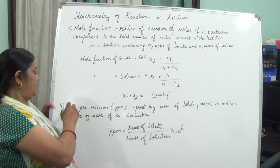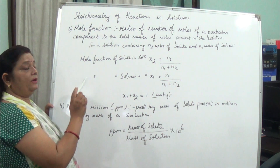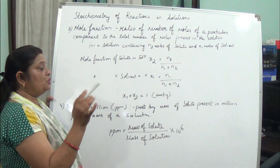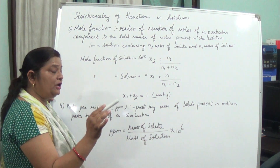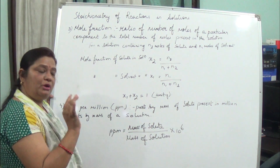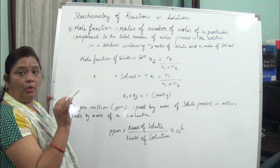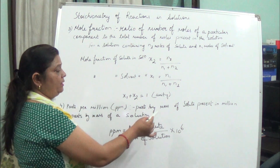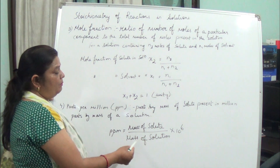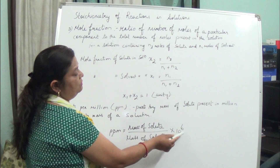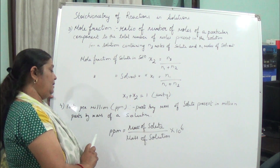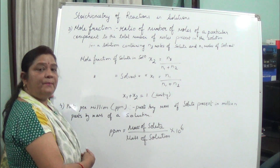The fourth point is parts per million, or ppm. It means parts by mass of solute present in one million parts by mass of solution. The formula is: mass of solute upon mass of solution, multiplied by 10 to the power 6. With this formula we can find out how much solute is present in parts per million.